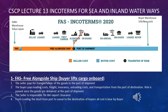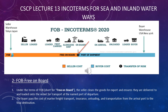The buyer is responsible for loading the stock from the port into the vessel and then shipping it to its own warehouse in New York. So all the sea shipment cost, insurance cost, risk, offloading and loading at the USA port, and the custom duties will be borne by the buyer. I hope this term is now clear.